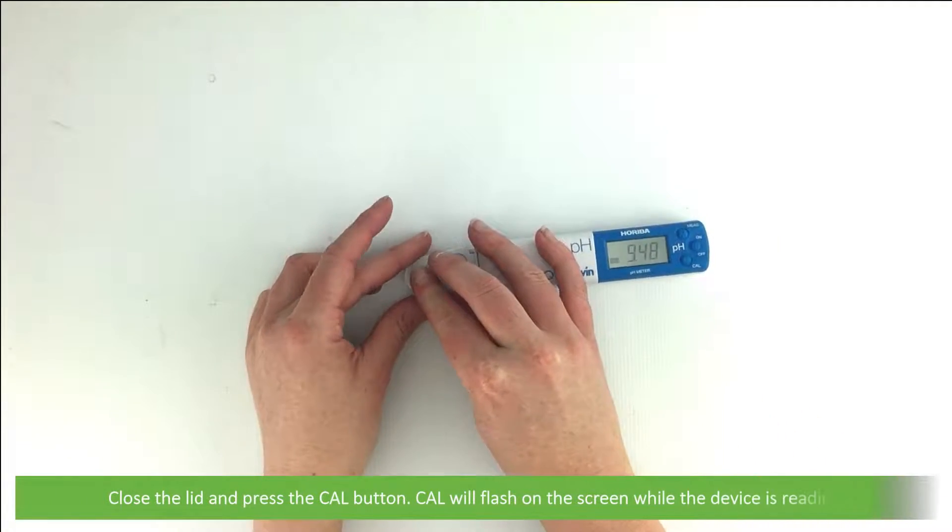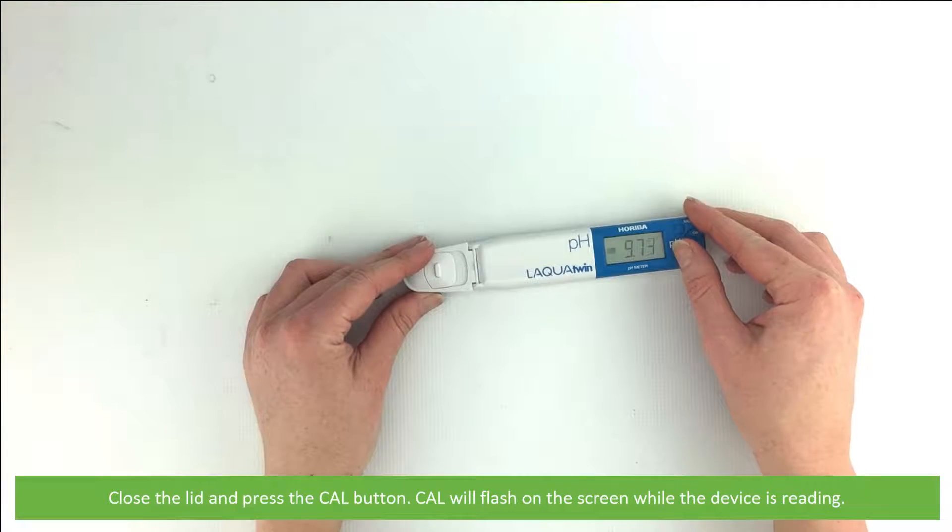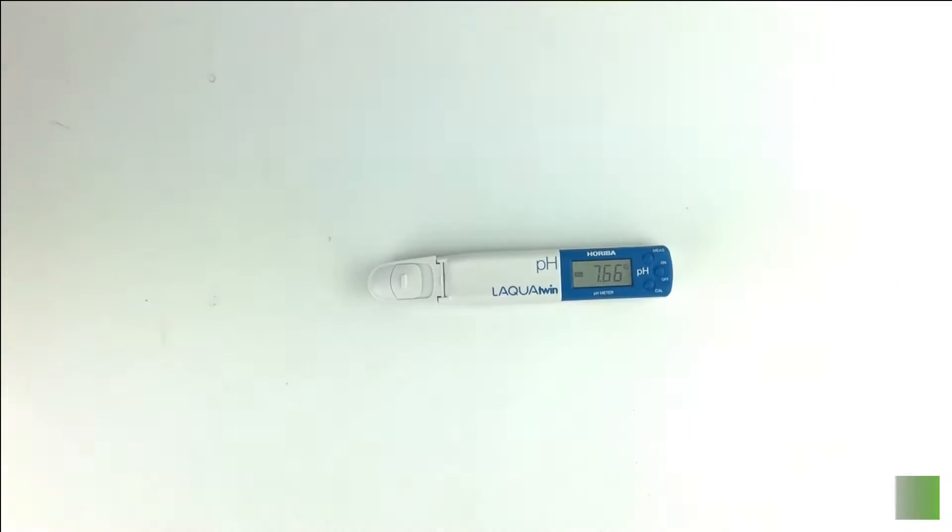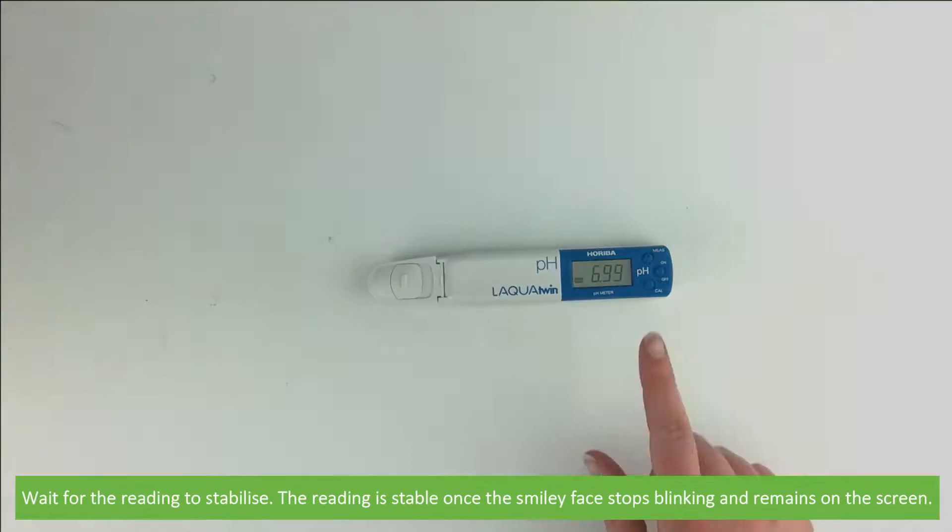Close the lid and press the Cal button. Cal will flash on the screen whilst the device is reading. Wait for the reading to stabilize. The reading is stable once the smiley face stops blinking and remains on the screen.